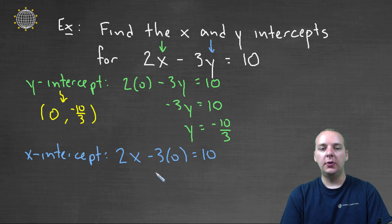So we'll have two x equals ten, because three times zero is zero. Divide both sides by two, and we'll get x equals five. So knowing that x is five, when the y-value is zero, should show us where our x-intercept is. It'll be at five, comma, zero this time.